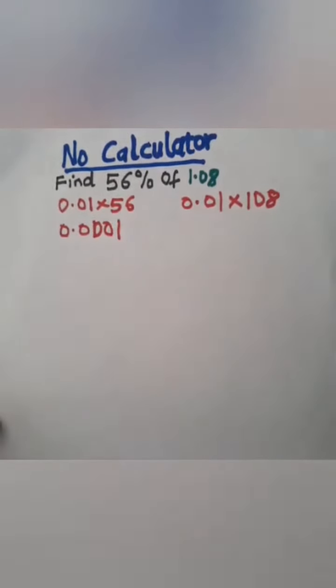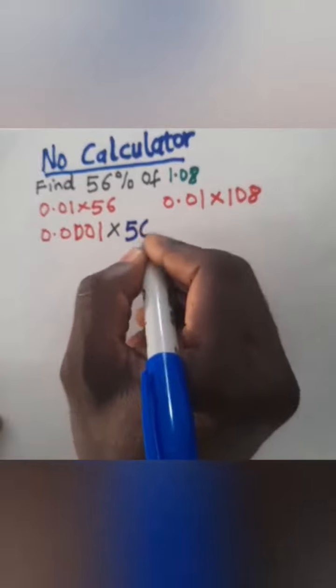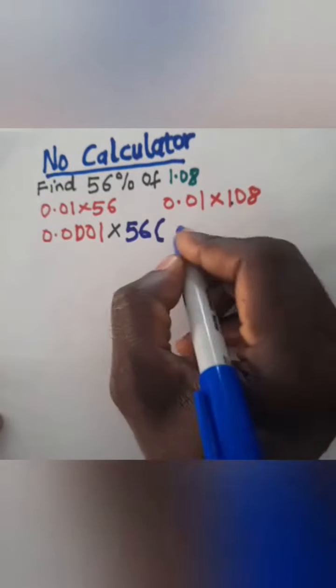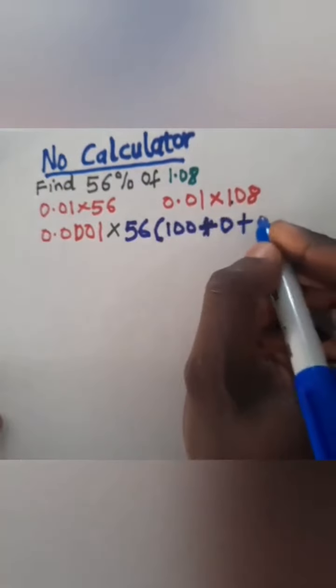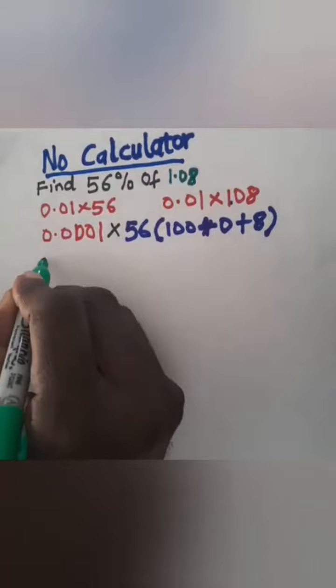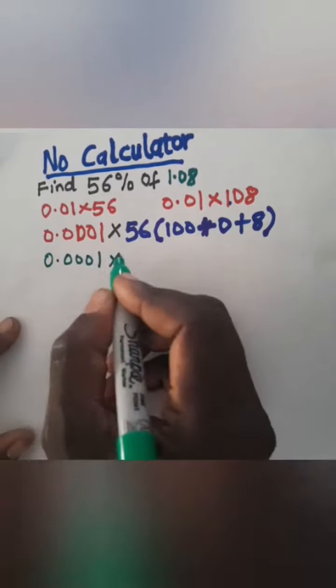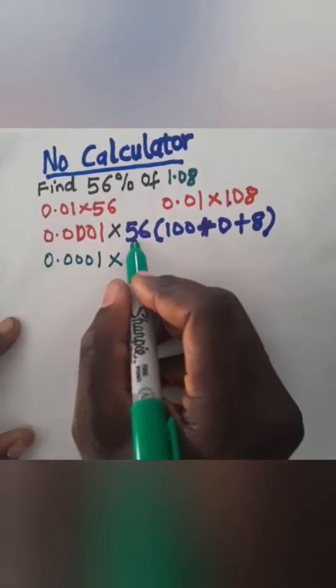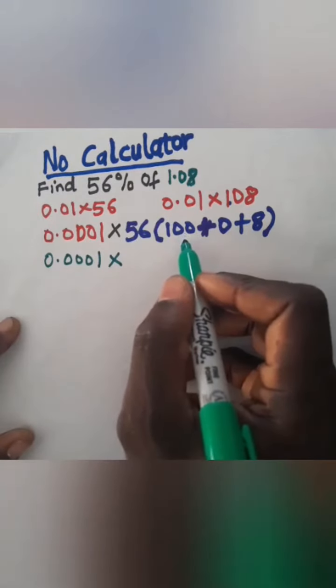Now distribute this over this, so I'll have 56 into 100 plus 0 plus 8. Then I'll have 0.0001 times—I'll multiply 56 by 100, that would give me 5600.